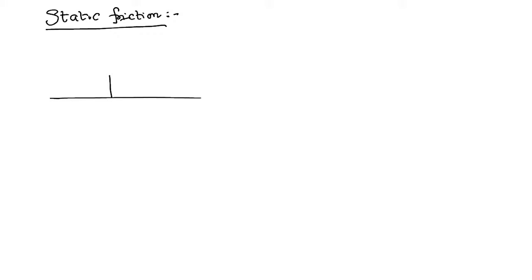The frictional force acting between two bodies that are in the state of rest is called static frictional force. Let us imagine a rough surface and a body on that rough surface. Right now these two bodies are in the state of rest. One simple point: if no external force is applied on the system, there is no frictional force. Friction only opposes the relative motion. When there is no one trying to move the body, there is no frictional force at all.